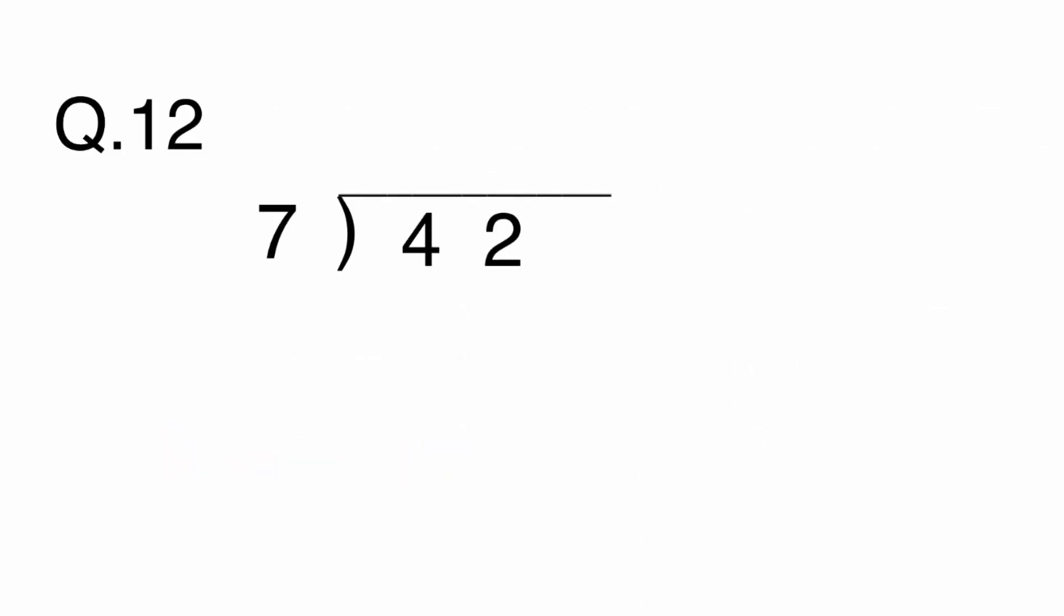Question 12: 42 divided by 7. A: 6, B: 8, C: 35, or D: 49?